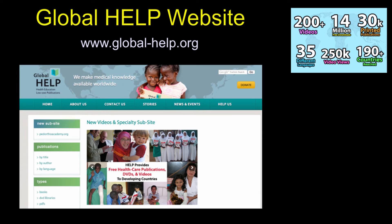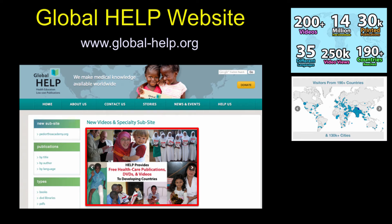We have a website, www.global-help.org, with over 200 videos. We've had 14 million downloads, tens of thousands of publications, over 100 different publications in 35 languages, a lot of video views, and material used from around the world. These are the countries and sites where most of our downloads have occurred.